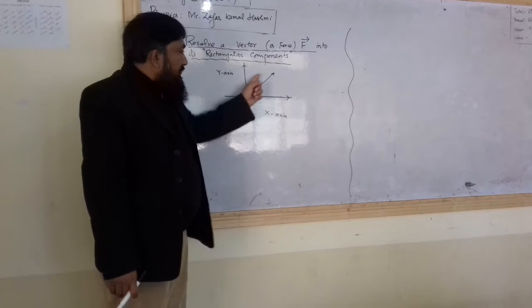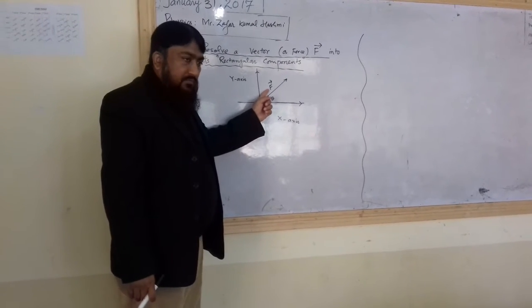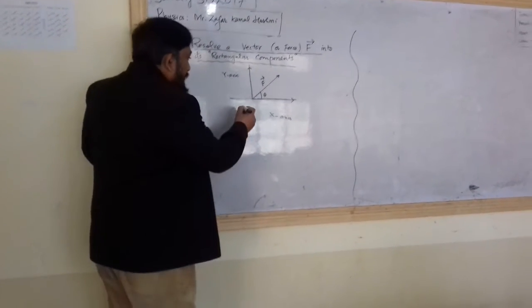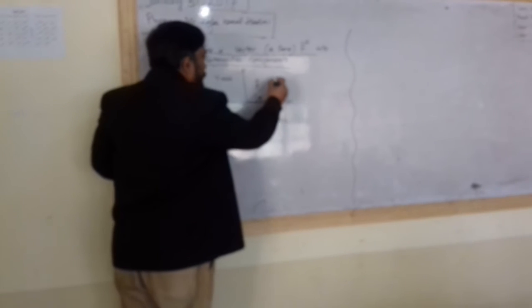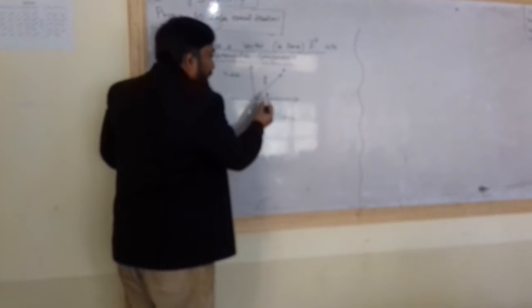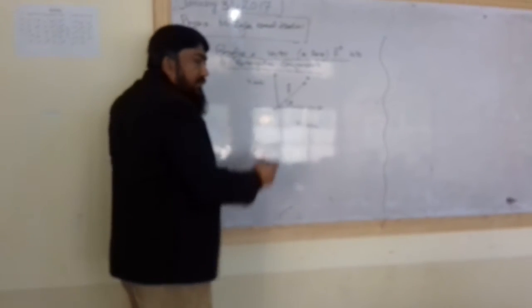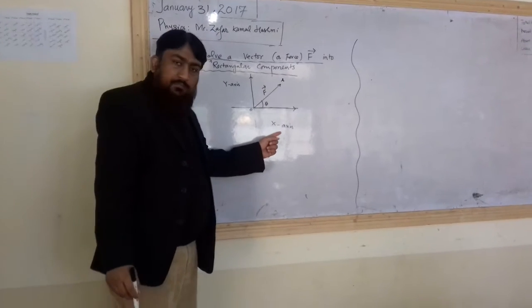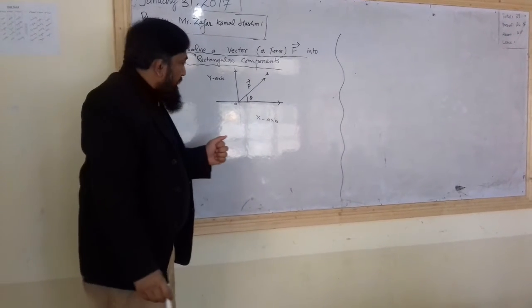So this is your vector of force F, and it is shown by line OA, making an angle theta with X axis.